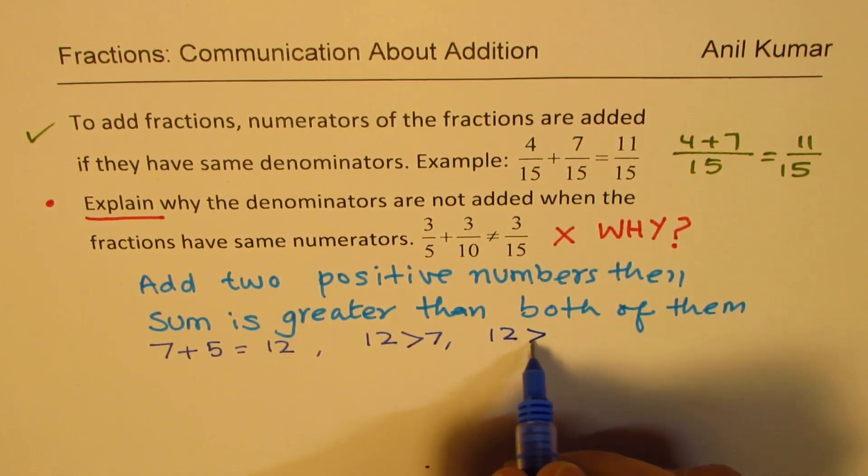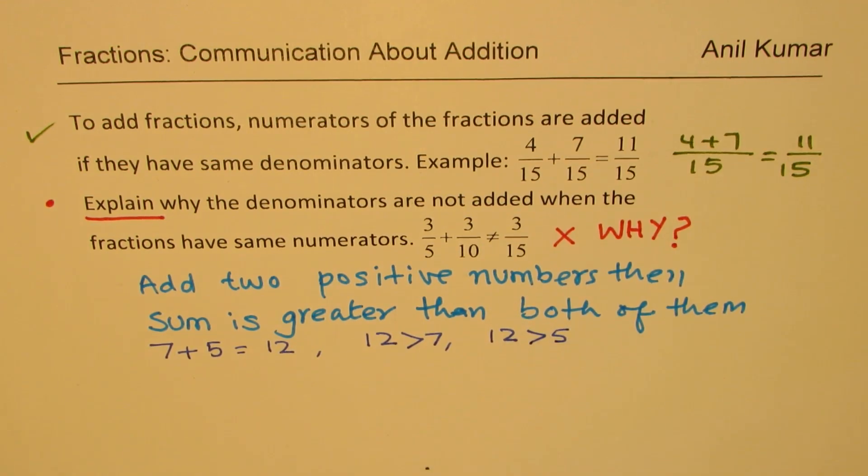So when we add two positive numbers, we do get a sum which is always greater, correct? So that's a rule. That is how our number system works.